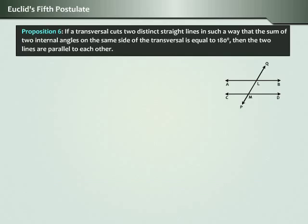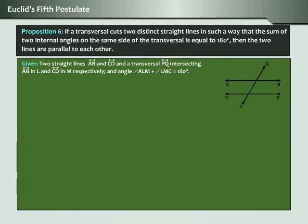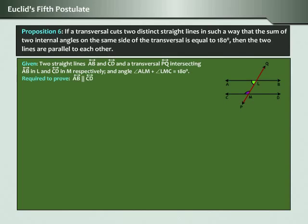Now let us see one proposition on it. Proposition 6: if a transversal cuts two distinct straight lines in such a way that the sum of two internal angles on the same side of the transversal is equal to 180 degrees, then the two lines are parallel to each other. Given: two straight lines AB and CD and a transversal PQ intersecting AB in L and CD in M respectively, and angle ALM plus angle LMC is equal to 180 degrees. We need to prove that AB is parallel to CD.